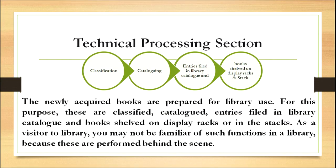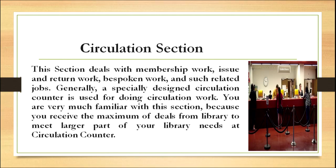The second section is the technical processing section. The newly acquired books are prepared for library use — they are classified, catalogued, entries are filed in the library catalogue and books are shelved on display racks or in the stacks. As a visitor to the library you may not be familiar with such functions because these are performed behind the scenes.